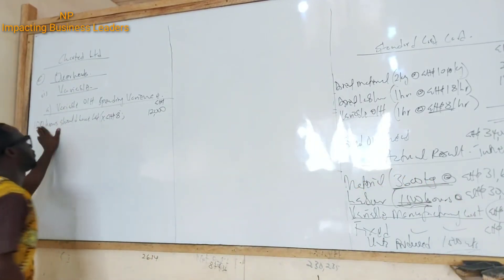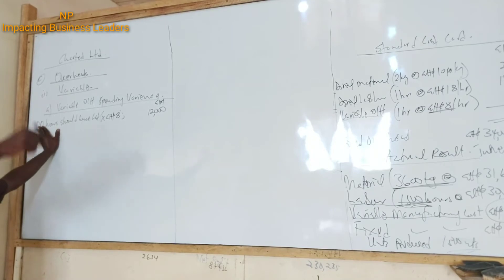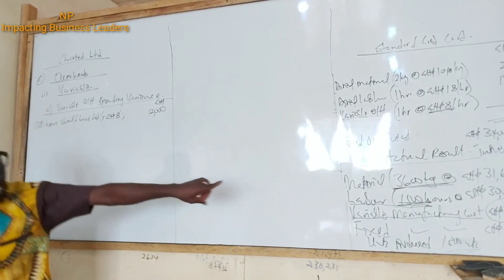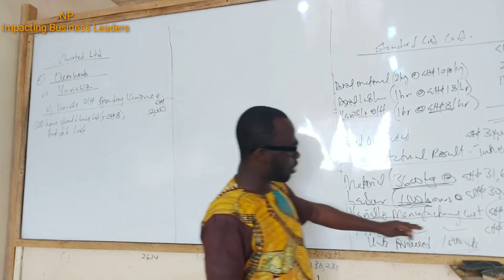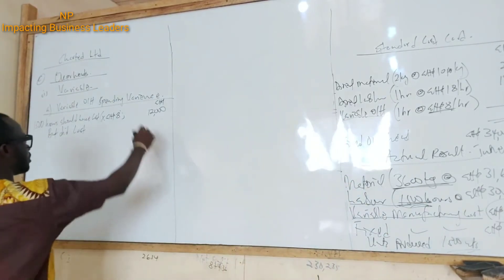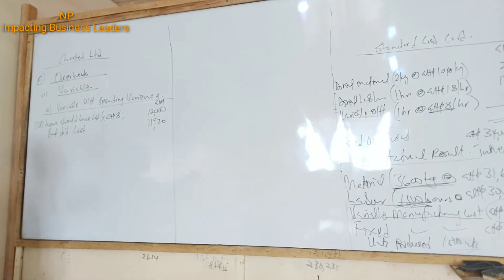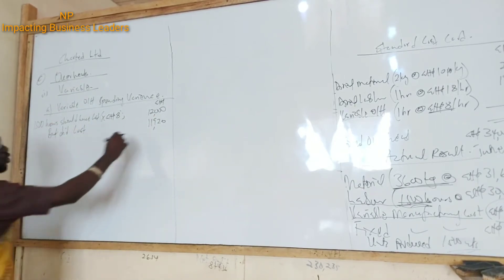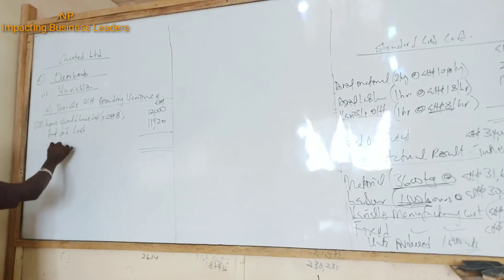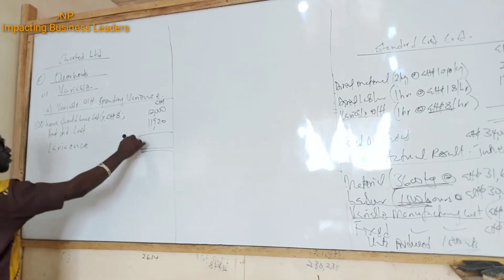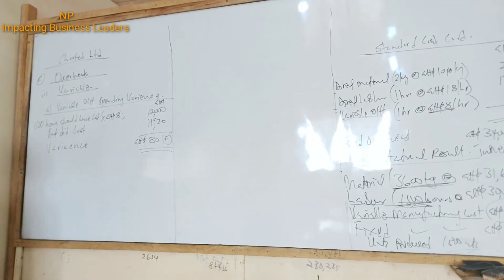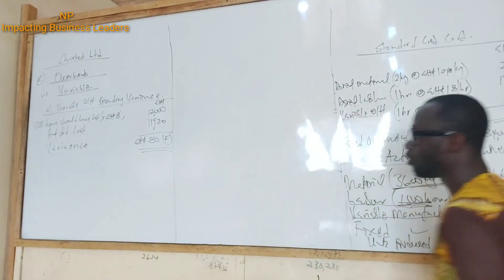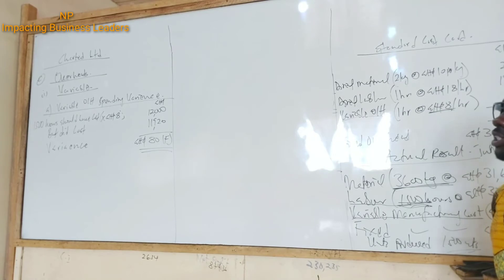The 1,500 hours based on variable production overheads should cost us 12,000. But how much did we actually pay? The variable overheads actual was 11,920. That is how much we paid in variable overheads. The difference gives us the variance — that would be 80. And that is the variable overhead spending or expenditure variance.